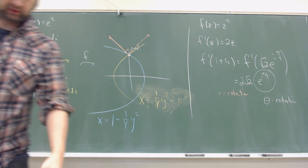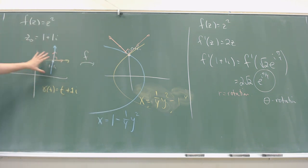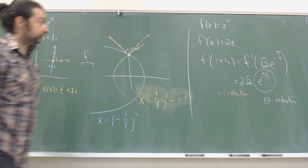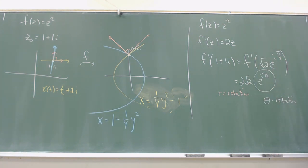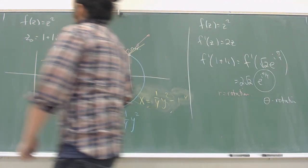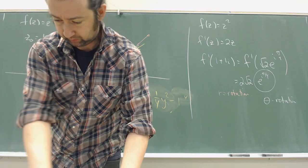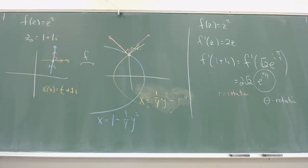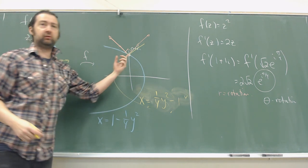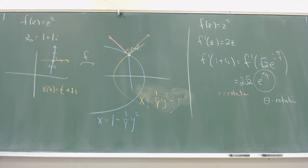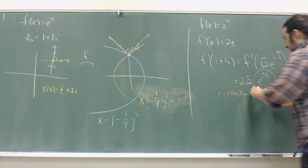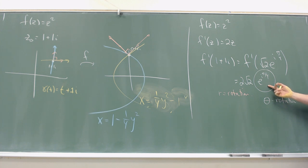That was the upshot of last time. The first exercise is to draw a square and track the image of the square, including figuring out where the interior goes. This works at points where the derivative is not zero, because if the derivative is zero, you destroy any information you can extract about the frame. If I have a zero here, I don't know if there's a rotation or not — I have no idea what the stretch factor is.